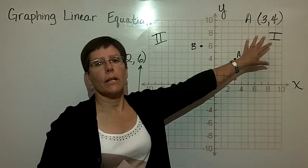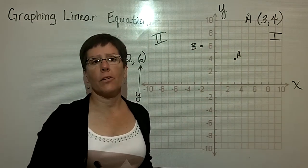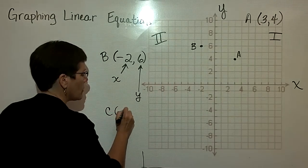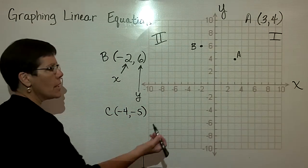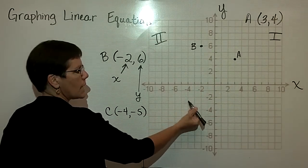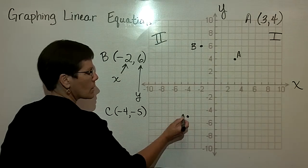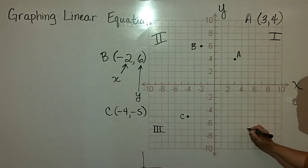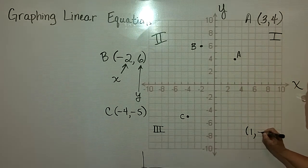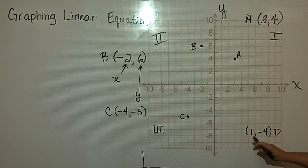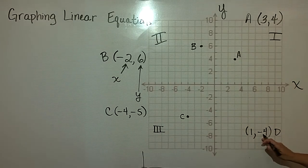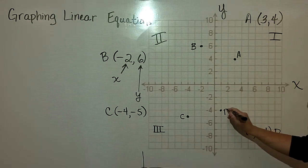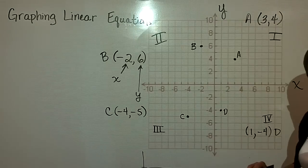Point B is in what is called the second quadrant. The first quadrant is in the upper right corner, and going counterclockwise we have the first, second, third, and fourth quadrants. If I plot ordered pair C with x = -4 and y = -5, from the origin I go left 4 and down 5 — that's point C in the third quadrant. Finally, point D has x = 1 and y = -4: I go right 1 and down 4, and plot point D in the fourth quadrant.